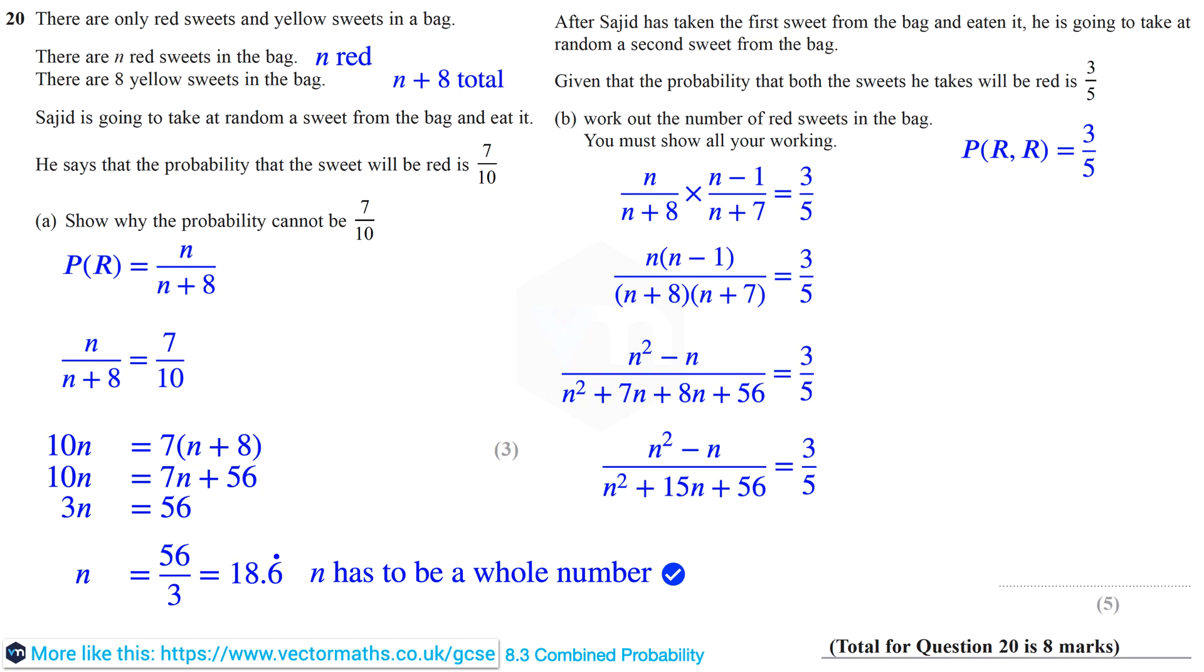And now we can cross multiply. And after expanding and simplifying we get 2N squared minus 50N minus 168 equals 0. Dividing through by 2, N squared minus 25N minus 84 equals 0. And of course this factorizes as N plus 3 times N minus 28 equals 0.